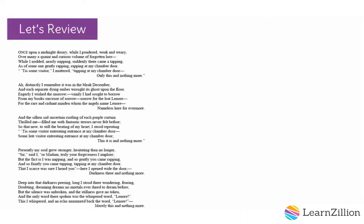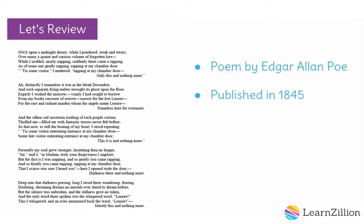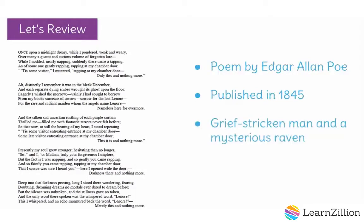We've been reading the poem The Raven by Edgar Allan Poe. Poe was known for his dark and mysterious literature, and The Raven is no exception. The poem was published in 1845 and features a narrator who is grief-stricken over the death of his love Lenore. Late one night, a mysterious raven enters his bedroom and speaks one word to the narrator. The narrator is spooked by the raven and considers the raven an evil omen and a sign that Lenore is truly gone.